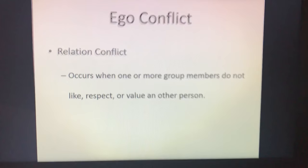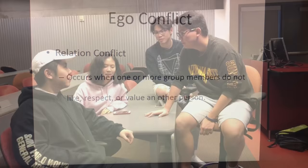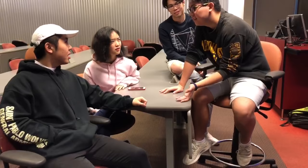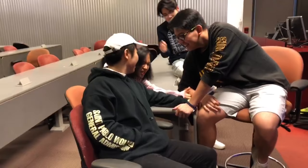Relation conflict occurs when one or more group members do not like, respect, or value another person. Why is he even here? I don't like him — he's always late. Just walk over. Talk to him. Don't talk to him. It's so weird. Why is he really like that?